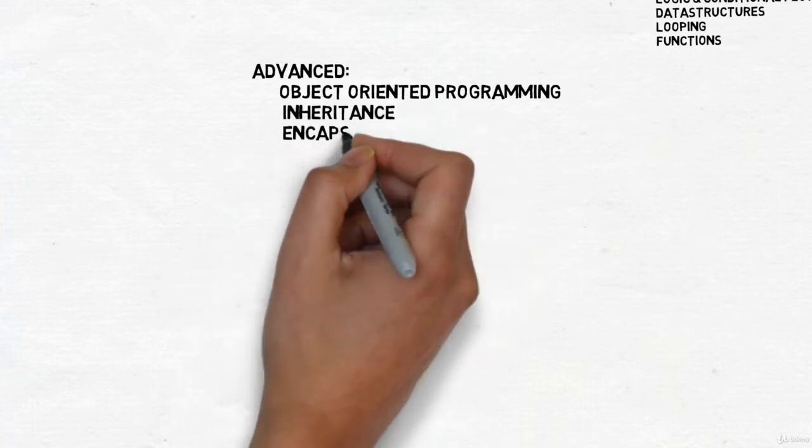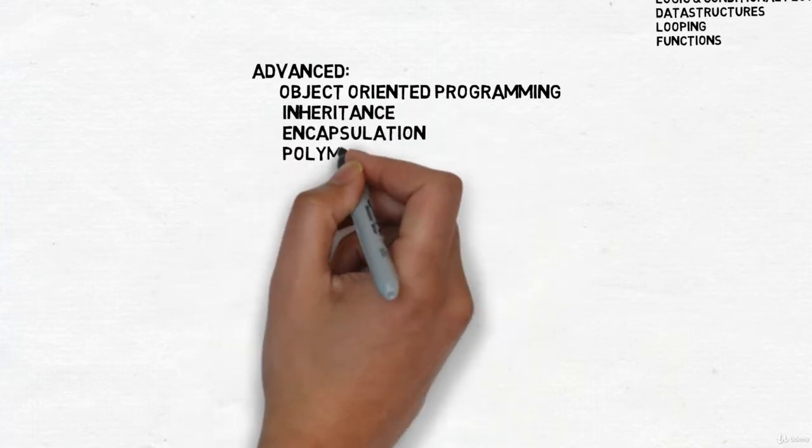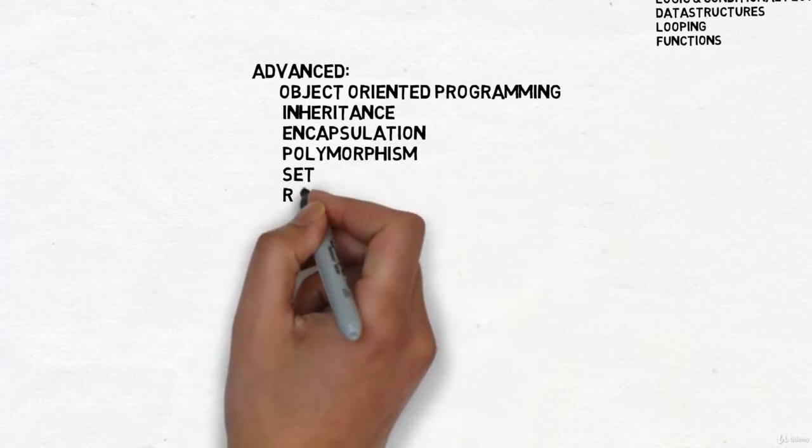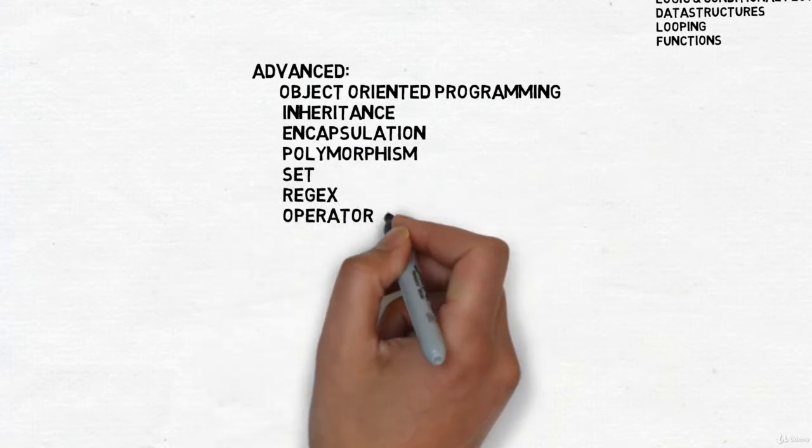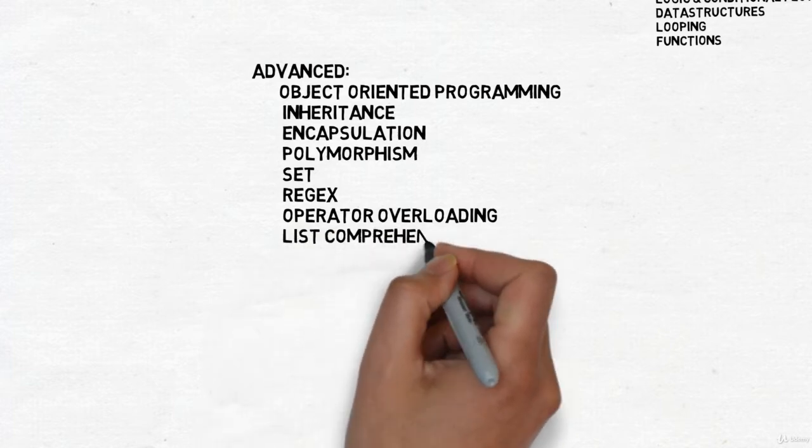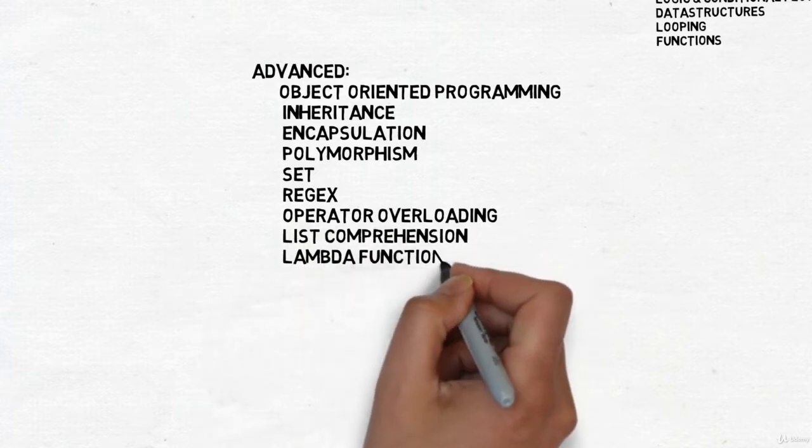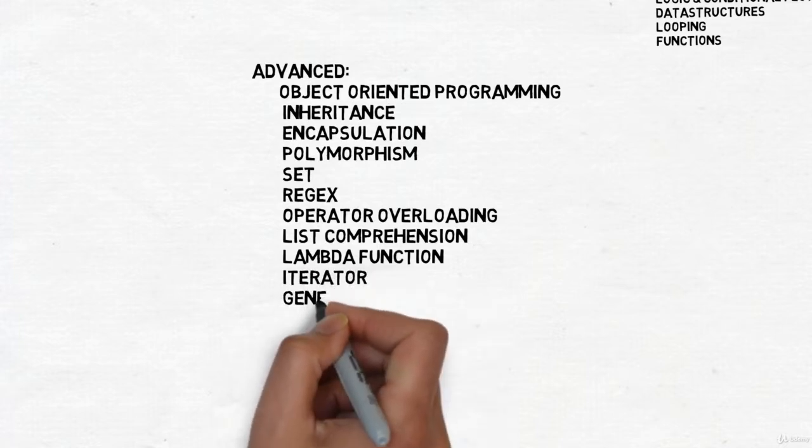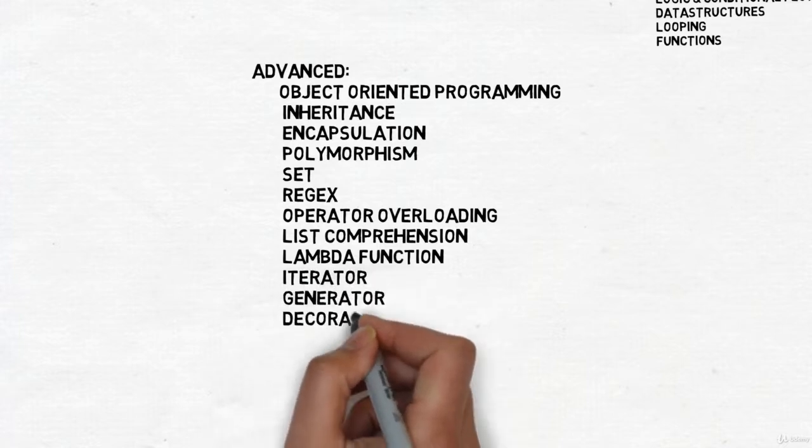We'll start with object-oriented programming and its characteristics like inheritance, encapsulation, and polymorphism. We'll also learn about sets and regular expressions, and some advanced topics like operator overloading, list comprehensions, lambda functions. We'll also learn about iterators, generators...